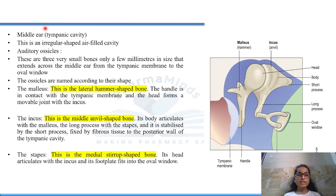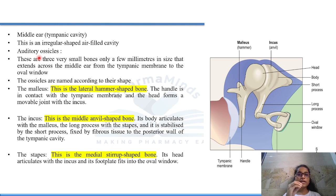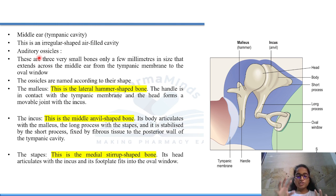Now the middle ear — the tympanic cavity. It is an irregularly shaped air-filled cavity. It consists of auditory ossicles — these are small bones of different shapes, each with a specific function. There are three very small bones, only a few millimeters in size, that extend across the middle ear from the tympanic membrane to the oval window.